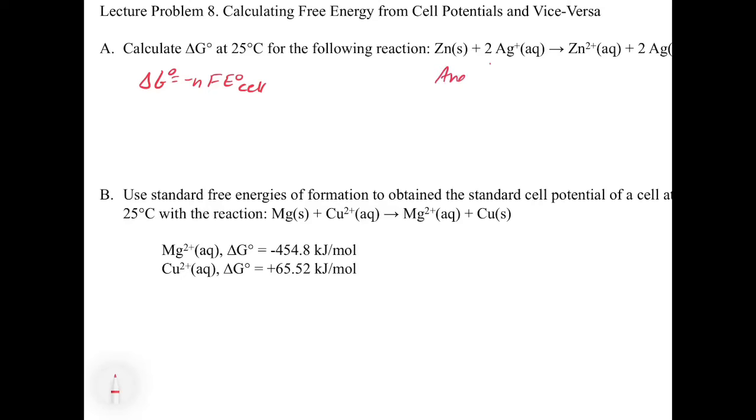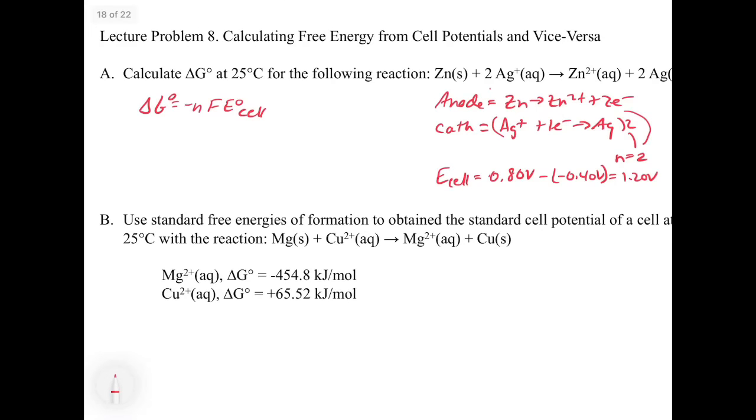So to calculate delta G, we've got to figure out what the E_cell is. So in this case, the anode is going to be zinc goes to zinc two plus, plus two electrons. And our cathode is going to be silver plus, plus one electron goes to silver. And to get everything to balance, we would have to multiply this by two. So from this, we know that n is going to equal two. And then if we calculate E_cell by looking up the cathode's half reaction, that's going to be 0.8 volts. And then if we subtract the standard reduction potential for zinc, which is minus 0.40 volts, we get a total of 1.20 volts. So now we have the two things. We have the n is equal to 2, and we have the cell potential.